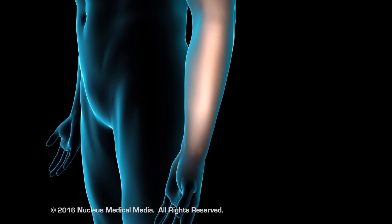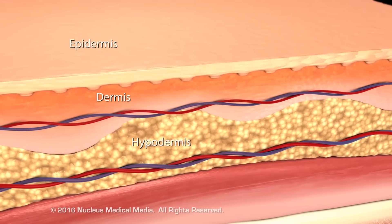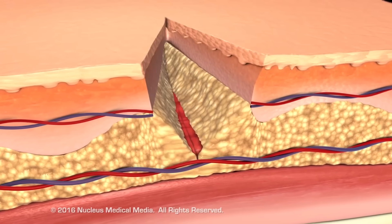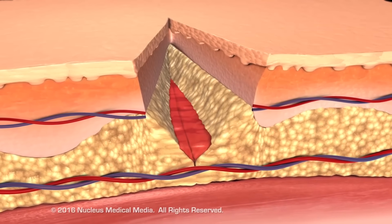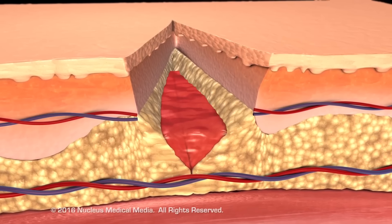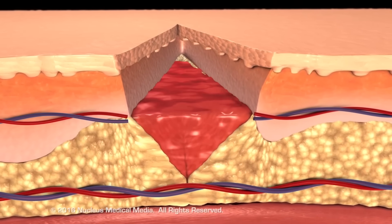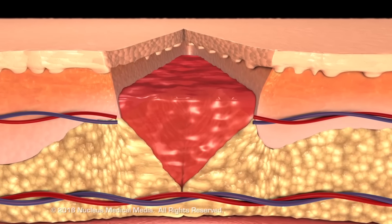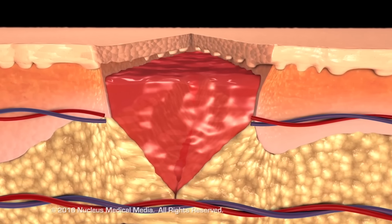An injury to the skin, such as a cut, scrape, or puncture wound, kills nearby cells and damages underlying structures, and triggers the complex process of repairing the skin.